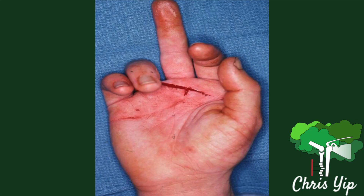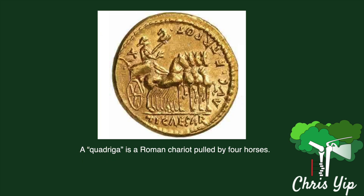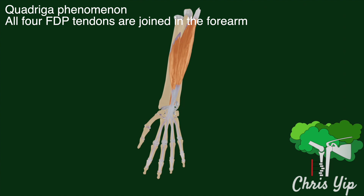In the case of flexor tendon lacerations, one may differentiate between a lacerated FDS tendon and FDP tendon via the quadriga phenomenon. The quadriga phenomenon describes the fact that the four flexor digitorum profundus tendons are all connected together in the forearm,